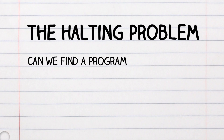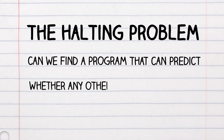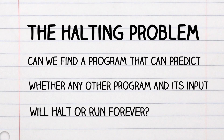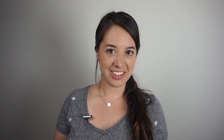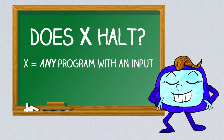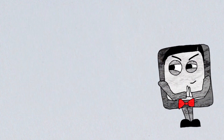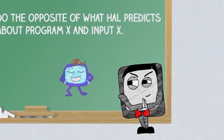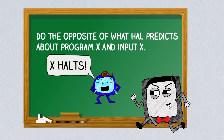Can we find a program that can predict whether any other program and its input will halt or run forever? Turing answered this in a really interesting way. He first imagined that such a program does exist — let's call it Hal. Hal claims he is capable of saying whether any other program and its input will halt or run forever. But what if we built another program, Barry, who does the opposite of what Hal predicts? So if Hal outputs 'halts,' Barry runs forever, and if Hal outputs 'runs forever,' Barry halts.